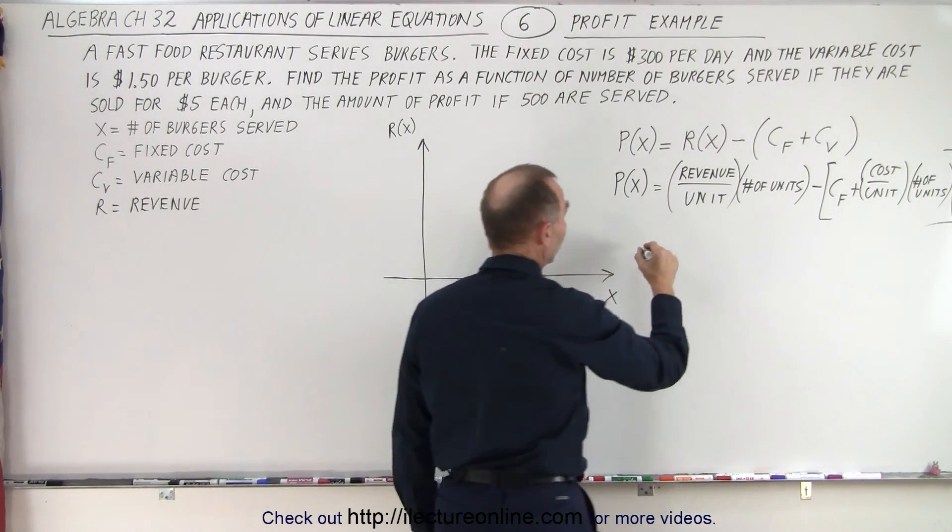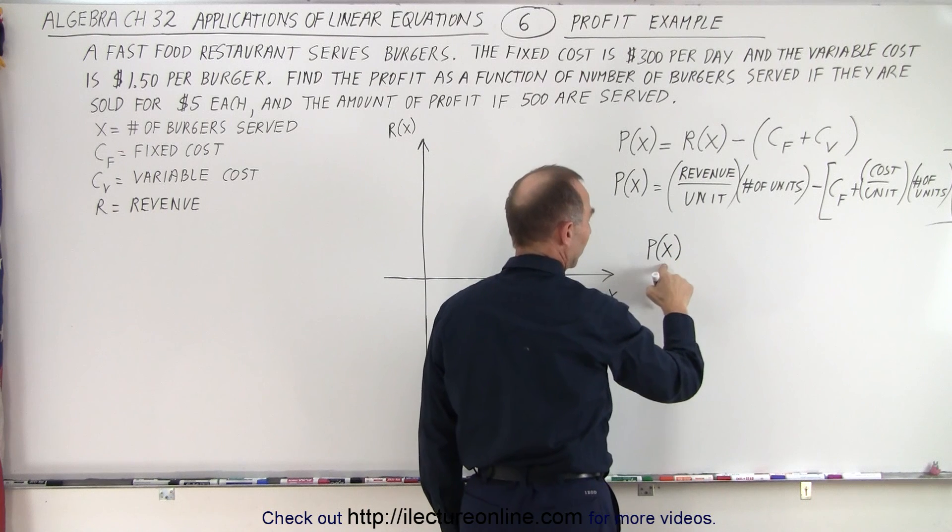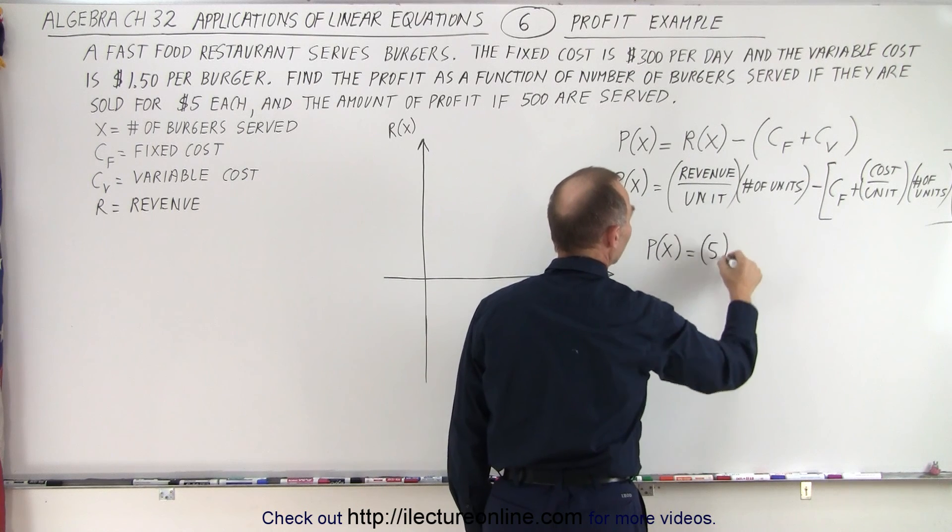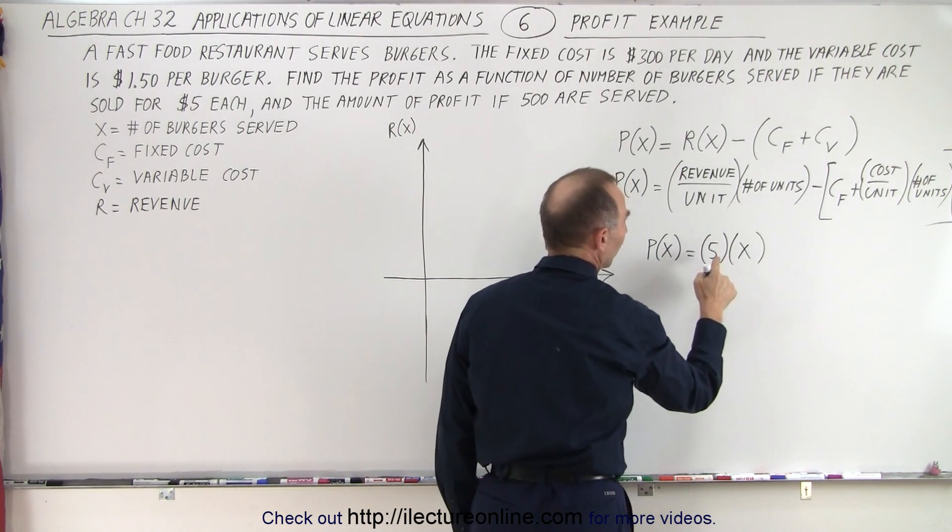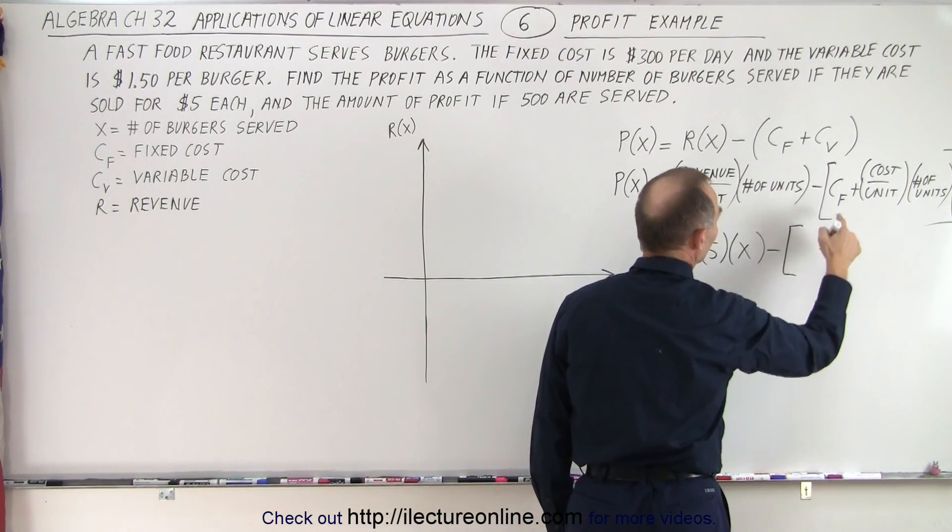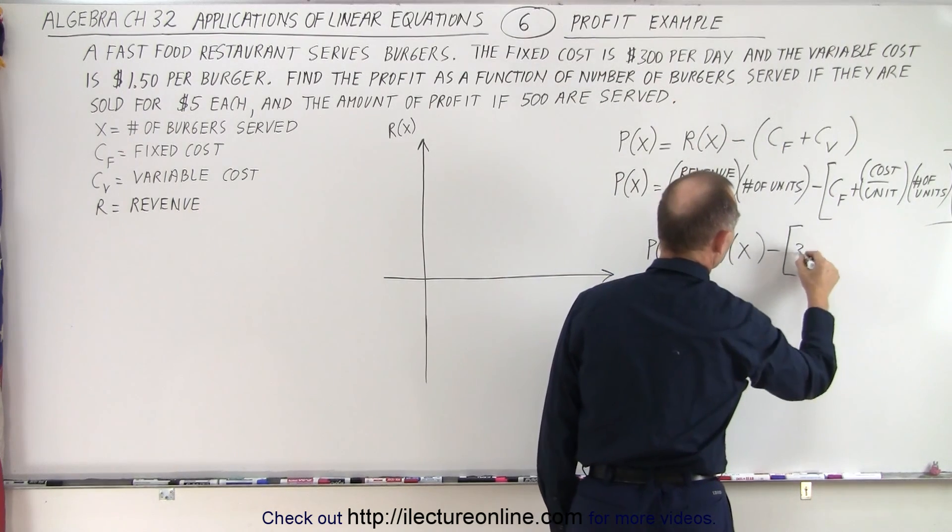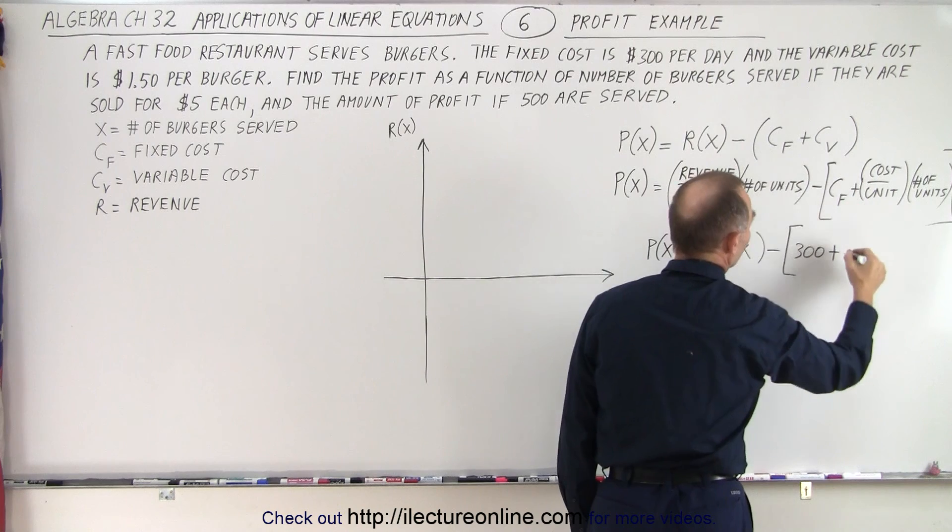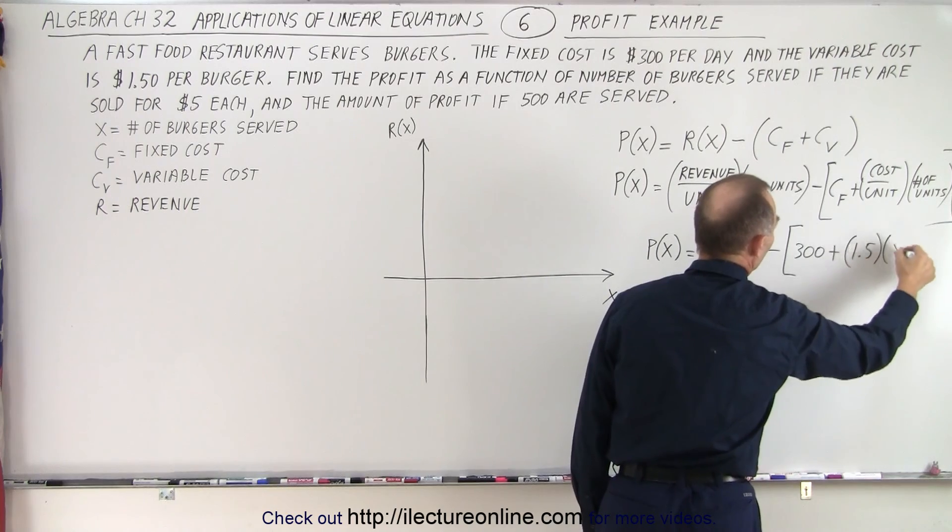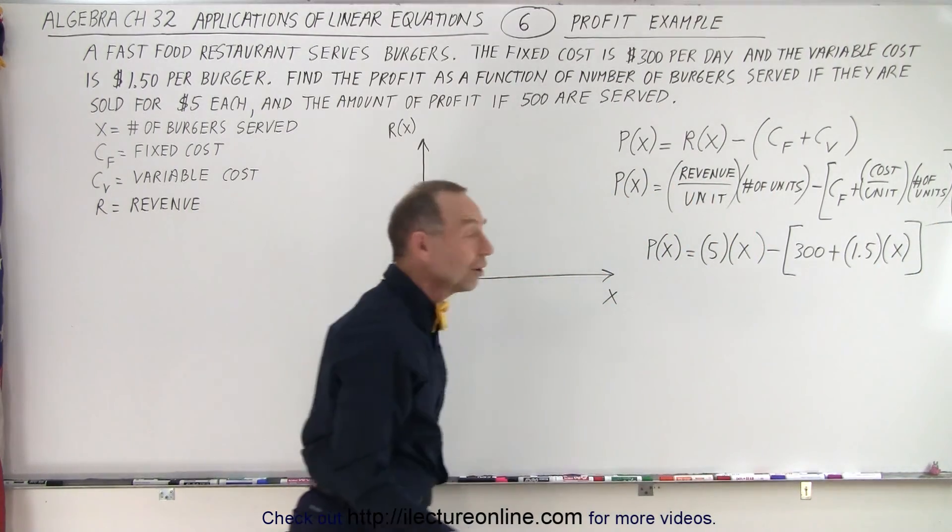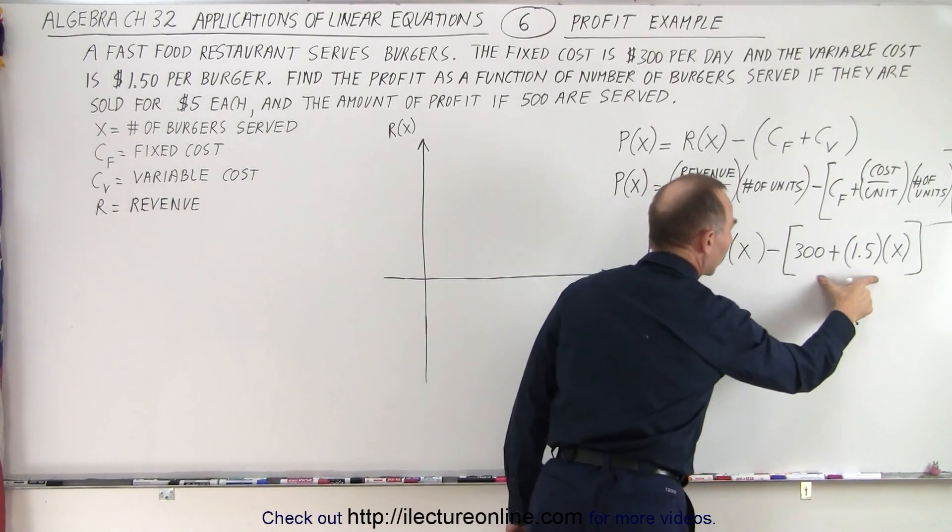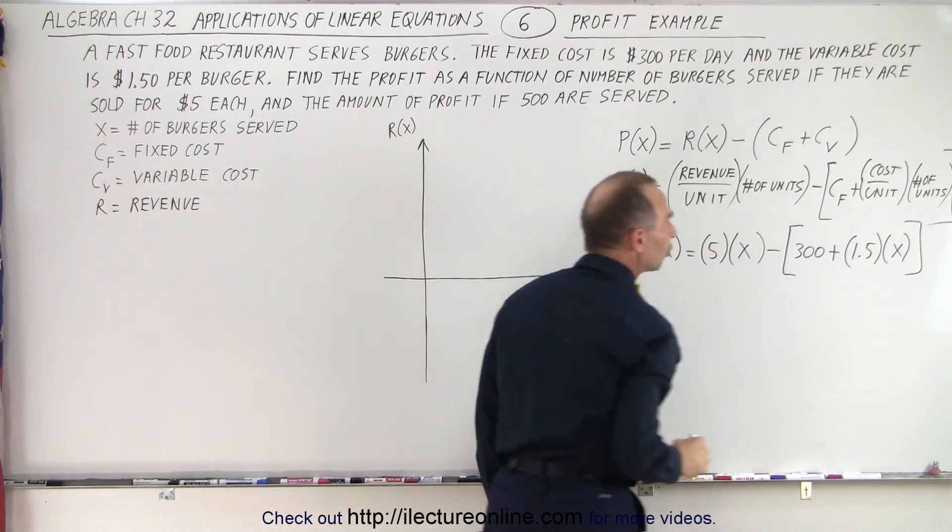Now the equation is going to look as follows. So the profit as a function of x, x representing the number of burgers served, is equal to the revenue, the revenue per unit, which is $5, times the number of units, which is x. So the amount of money you get per unit times the number of units, that's your revenue, minus the fixed cost, which in this case is $300, plus the variable cost, which is the cost per unit, which is 1.5 times the number of units, which is x. And so let's go ahead and put it like that, and a bracket around it. So there's our equation that represents the profit. The profit equals the revenue minus the cost. And notice that those two are added together to make up the total cost.